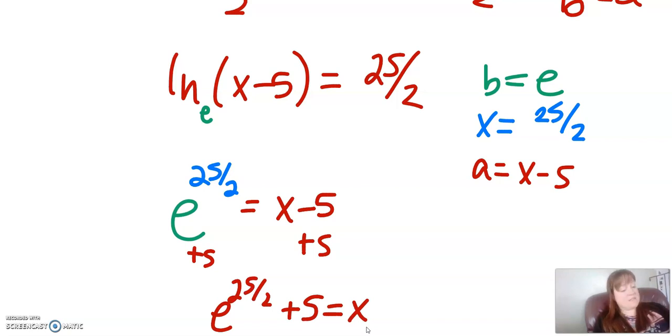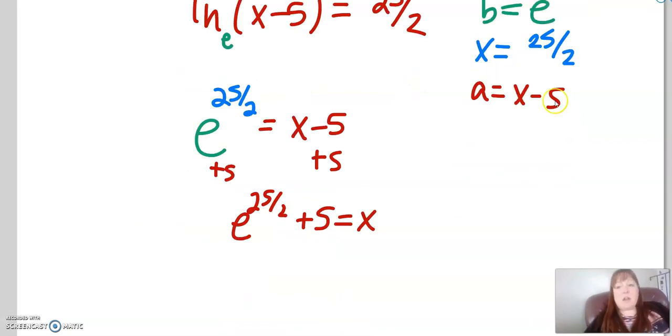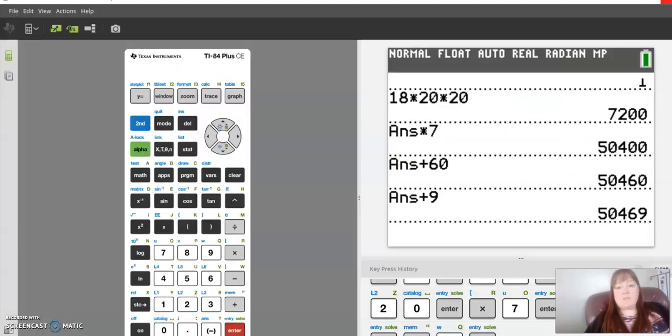So now x is all by itself. And then you're like, well, what do I do with it now? Well, e is in our calculator, right? So e to the 25 halves plus 5.